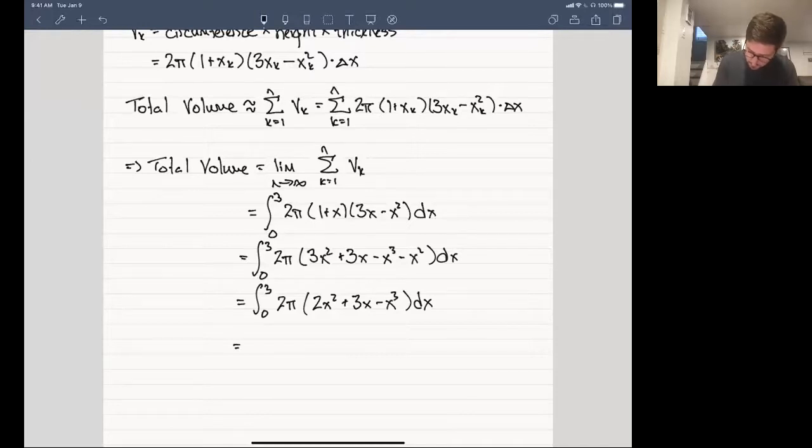If you find the antiderivatives here, we get 2 pi and then 2 over 3 x cubed, that's antiderivative of the first term, plus 3 over 2 x squared minus x to the 4 over 4, all running from 0 to 3.